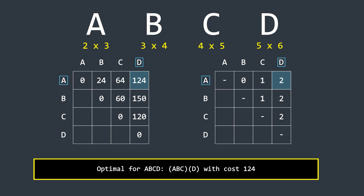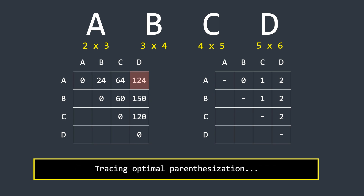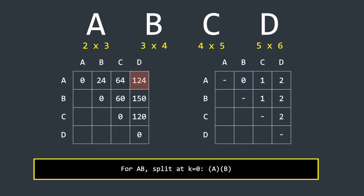The upper-right cell of the first table gives the most optimal multiplication cost for these four matrices. To find the actual order of multiplication, start from the upper-right cell of the second table — the value 2 means the split happens at index 2. Then recursively process the left part: value 1 means split at index 1, and further left, value 0 means split at index 0. Combining all results gives the final optimal multiplication order.